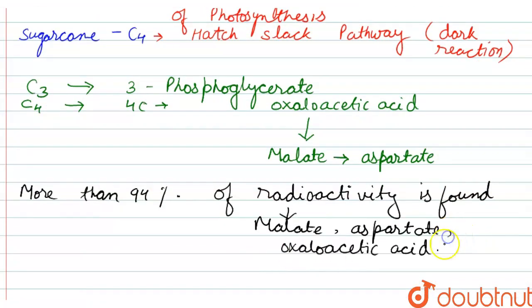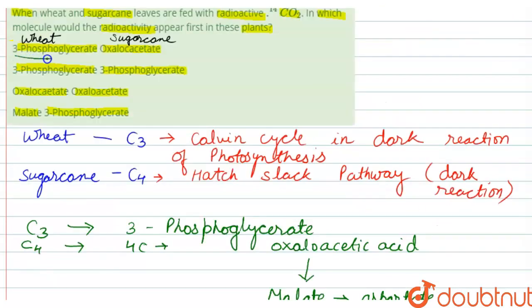So the correct option is option A, which is 3-phosphoglycerate and oxaloacetate, because oxaloacetate refers to oxaloacetic acid. Thank you.